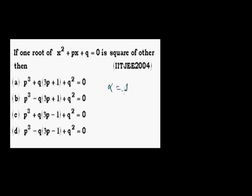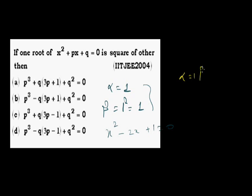Next, the last problem. In x² + px + q = 0, one root is the square of another root. Let's say one root alpha = 1, so beta = 1² = 1. With both roots equal to 1, the equation is x² - 2x + 1 = 0, so alpha = 1 and beta = 1.